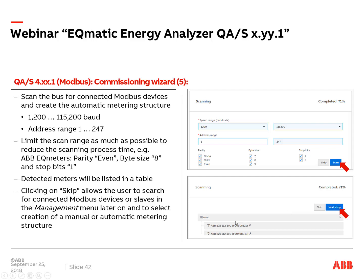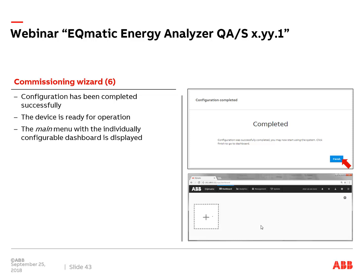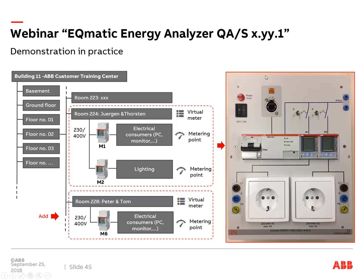For Modbus scanning, the speed range is between 1,200 and 115,200 baud, and the address range is 1 to 247 — maximum 16 or 64 Modbus slaves. Additional settings are required because it's RS-485: parity (none, odd, or even), byte size, and stop bits. All ABB EQ meters default to parity even, byte size 8, stop bits 1. It is recommended to limit the address and baud rate range during scanning to save time. After scanning, you get the same list overview of all detected meters. After the commissioning wizard is finished, you are connected to the device and see the dashboard — initially empty, as each user creates their own.